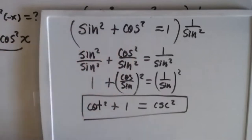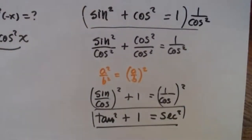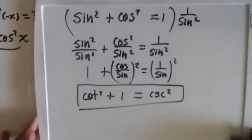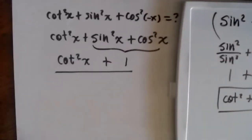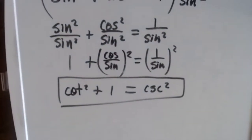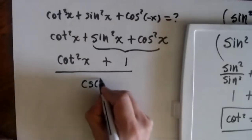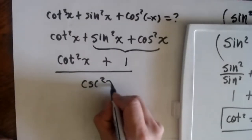This is very, very important. From this one, we can get two more — this one or this one. If we go back to our problem, cotangent squared plus one — what is cotangent squared plus one? Cotangent squared plus one is cosecant squared. So cosecant squared of x — that is the final answer.